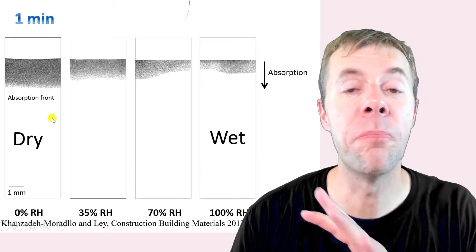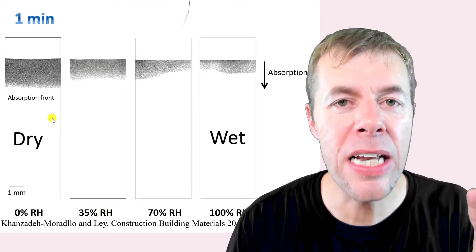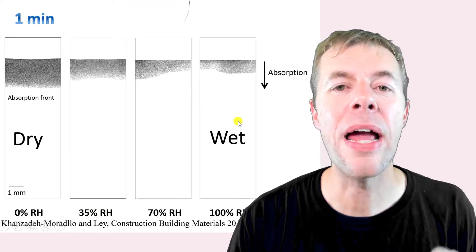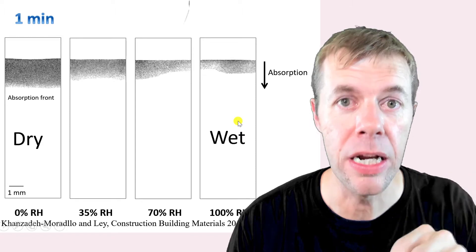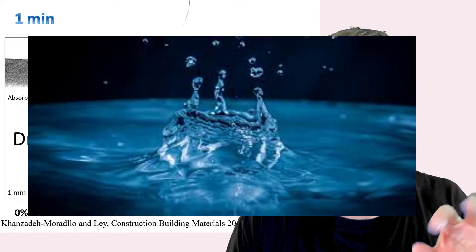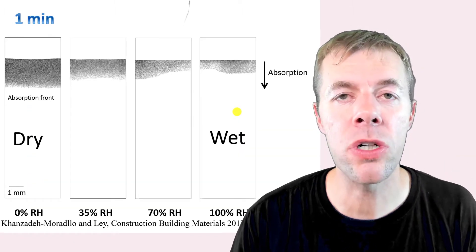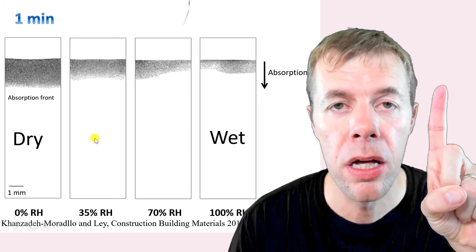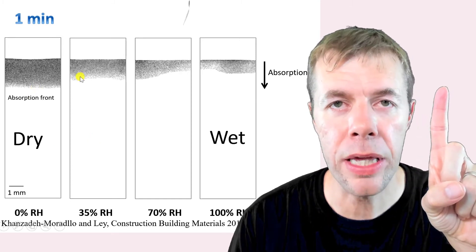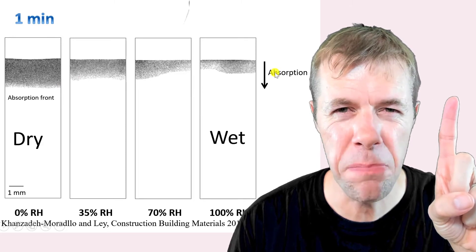Now this is a sample on the left. It is bone dry. It was in an oven. This is a sample on the right. We vacuum saturated it, filled up all the pores, and then we put that same solution on top. And this is after one minute. We can already see things going in after one minute.